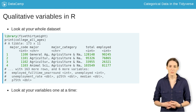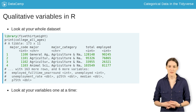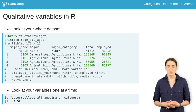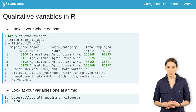The second way is to use the function is.factor. This will be true or false depending on whether the input is a factor. When we check the Major Category column, we see, just as above, it's not a factor.